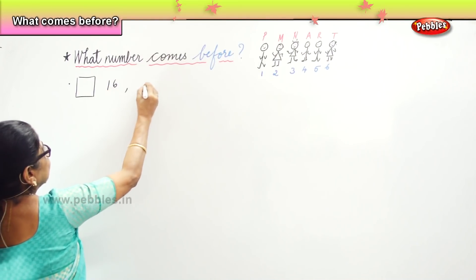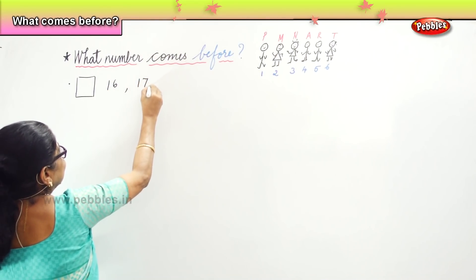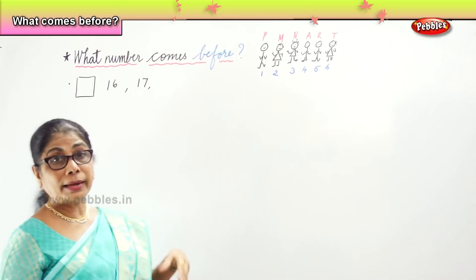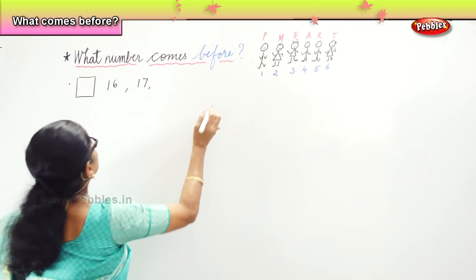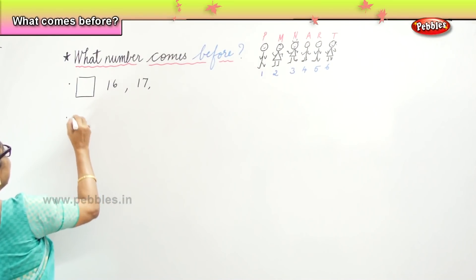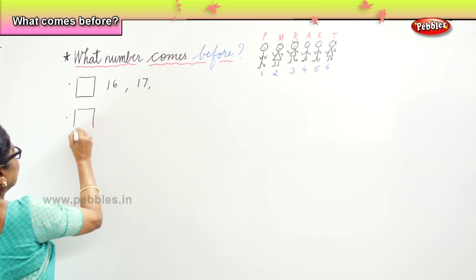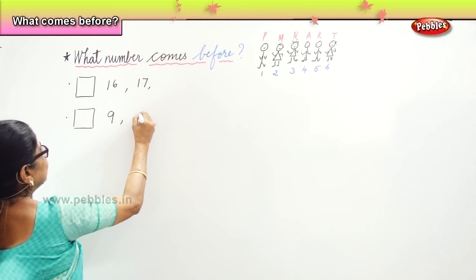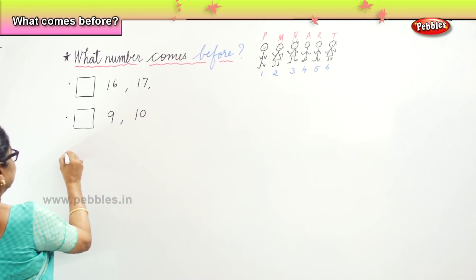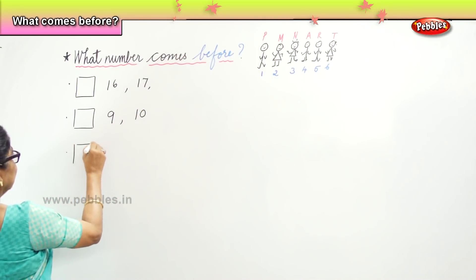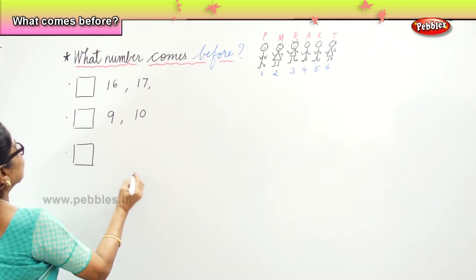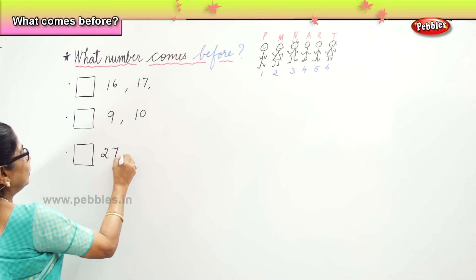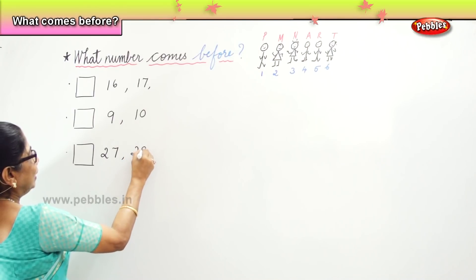Sixteen, seventeen — and what number comes before that? I do not know. Nine, ten. Twenty, twenty-eight — what number comes before?